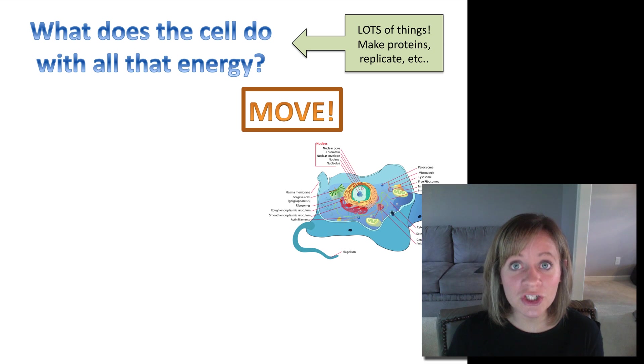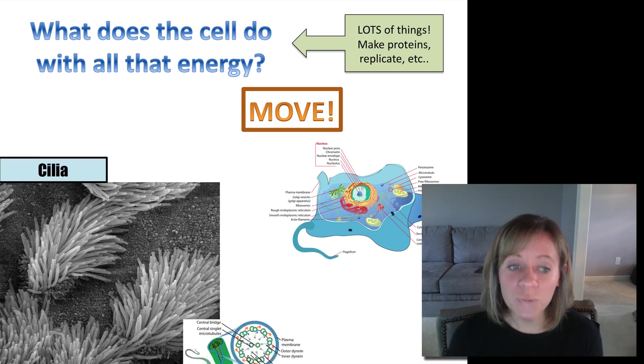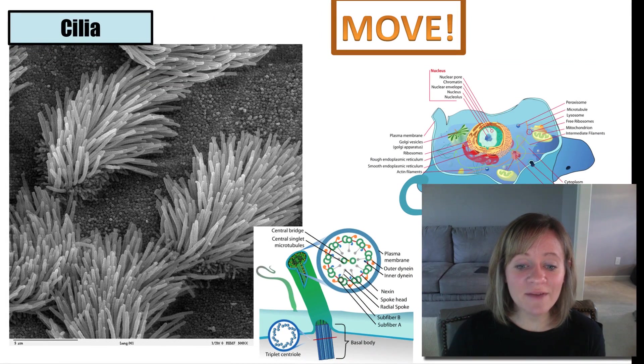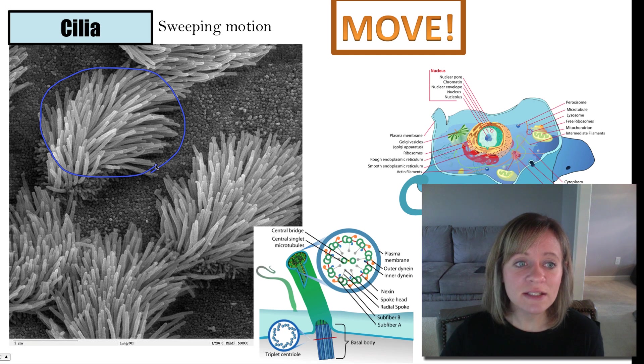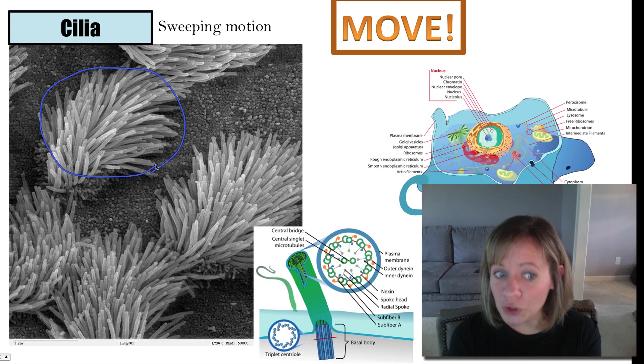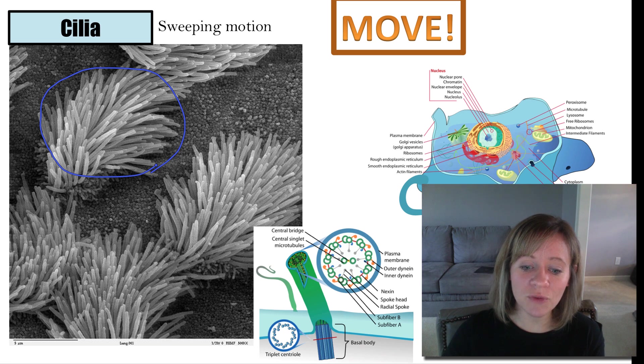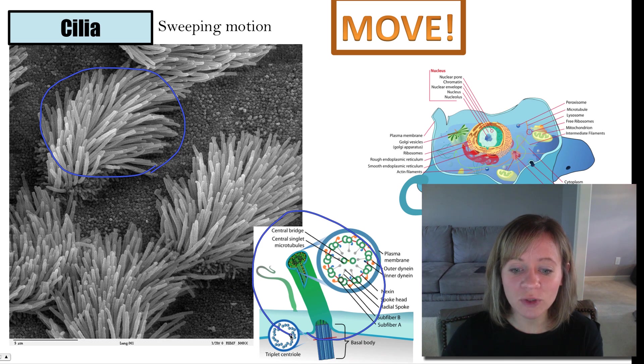So let's look at some structures that help your cells move. Some cells have cilia, and cilia function in a sweeping motion. I like to think of them as sort of like a broom. They sweep back and forth. And so this is a little close-up look at one little cilia.